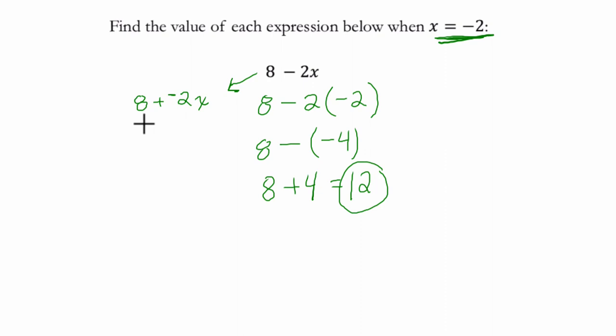Why did I do that? Well, I think it's easier to see how the arithmetic will work. When we plug in negative 2 for x here, we're going to have to add these two numbers. And it's 8 plus, well, negative 2 times negative 2 is a positive 4. And that is also, as you can see, 12.